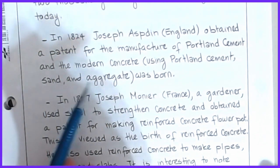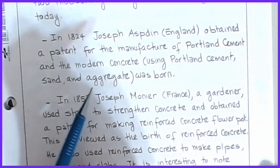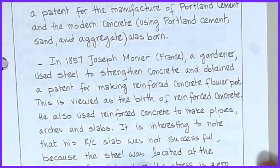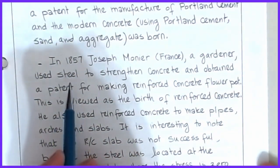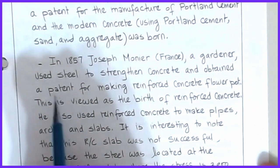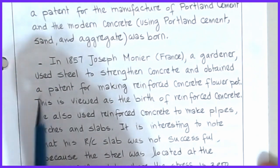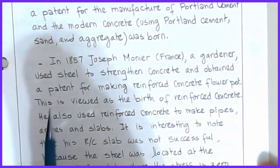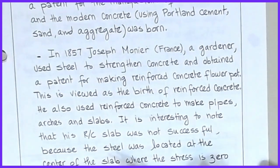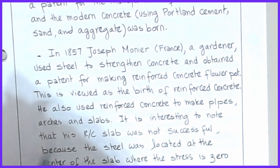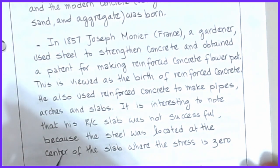One of the biggest jumping points for making concrete a useful modern day material was accomplished nearly 200 years ago. The first person to actually put steel to strengthen concrete was Joseph Monnier in 1857. He was a French gardener trying to make flower pots using concrete and steel to hold things together. He also used this to make pipes, arches, and slabs. But it's interesting to note that his reinforced concrete slab was not successful because of the location of where the steel was — there just wasn't the understanding of stress distribution.